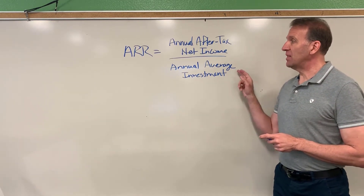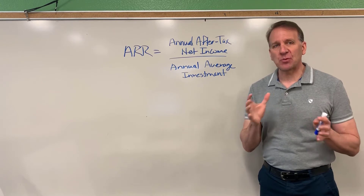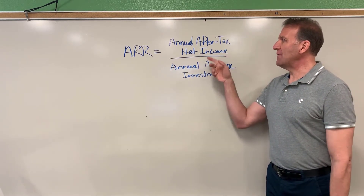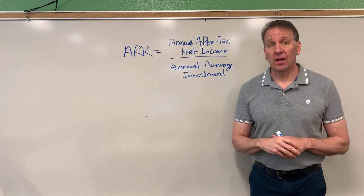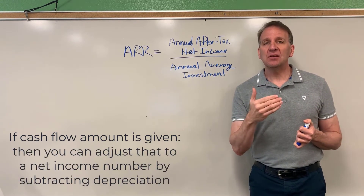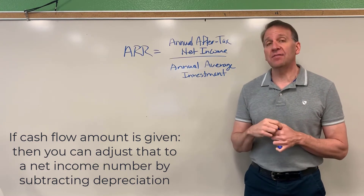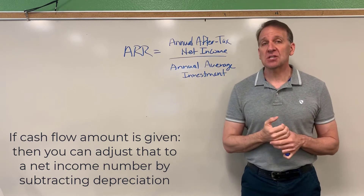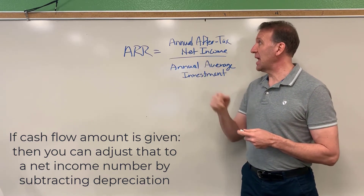Let's look more closely at this formula. Textbooks are infamous for doing this differently. I looked at about three textbooks and unfortunately all three did it slightly differently. Annual after-tax net income was pretty common between all of them, but some just gave you that number directly. One actually showed a cash flow number, then converted it into annual after-tax net income by calculating the depreciation for the investment and subtracting it out. So if they don't give you the net income directly, you can take the cash flow, subtract out depreciation, and back into the annual after-tax net income.